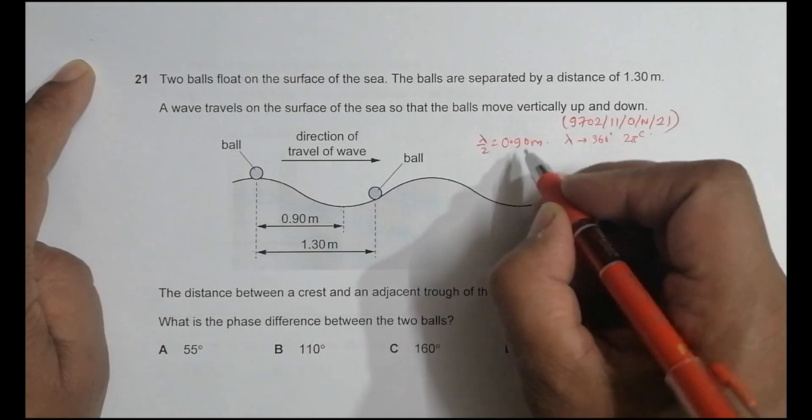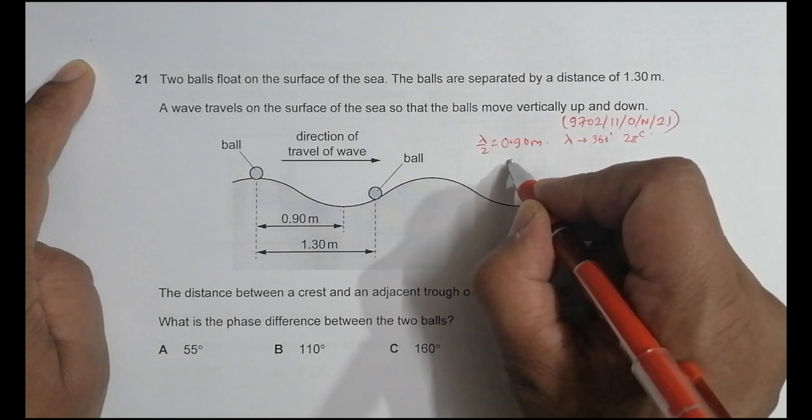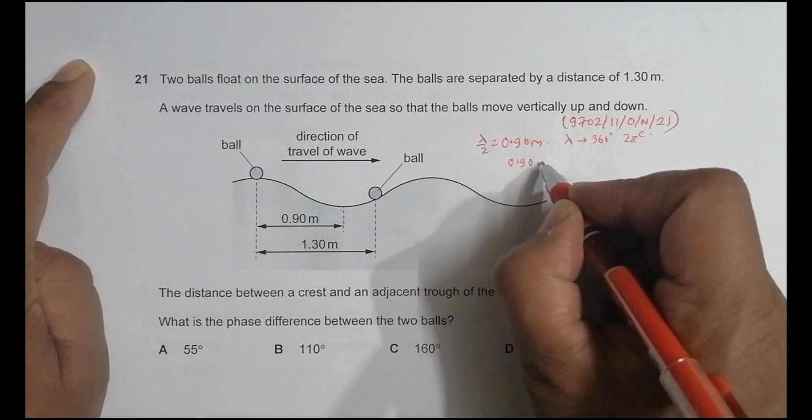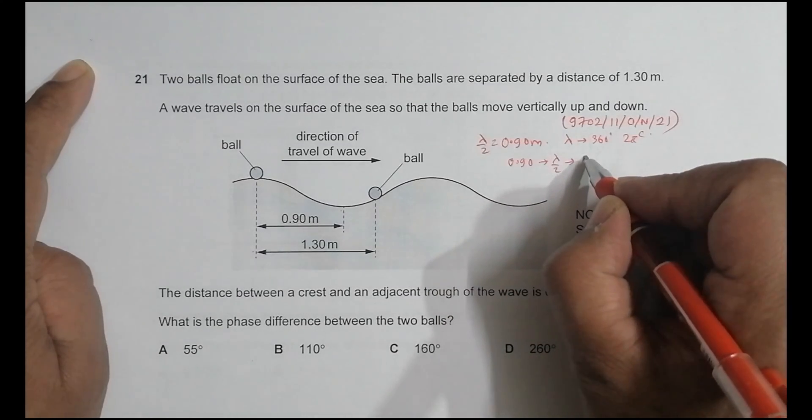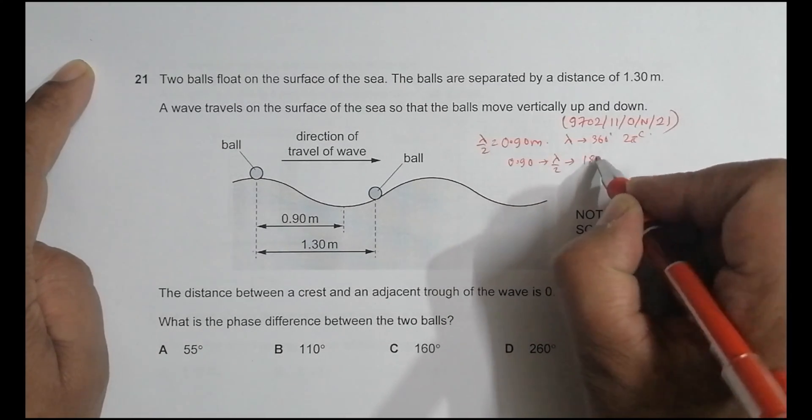So when it is lambda by 2, so 0.90 is lambda by 2, that means it's equal to phase difference of 180 degrees.